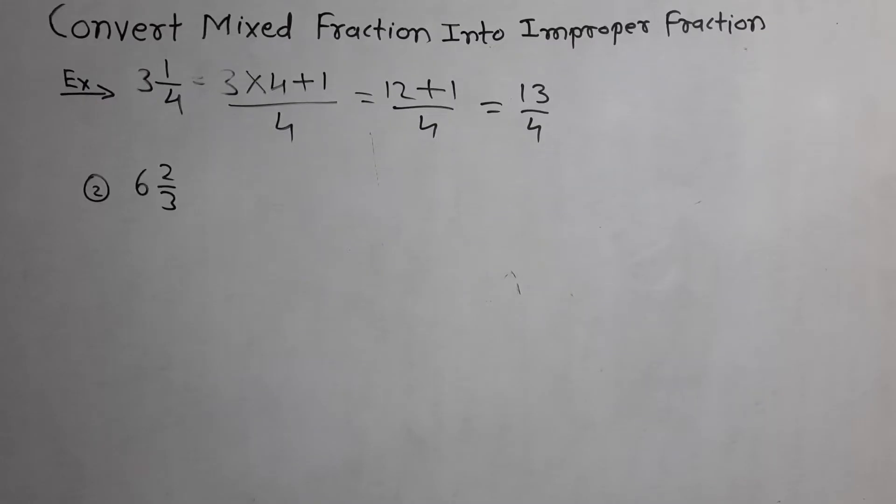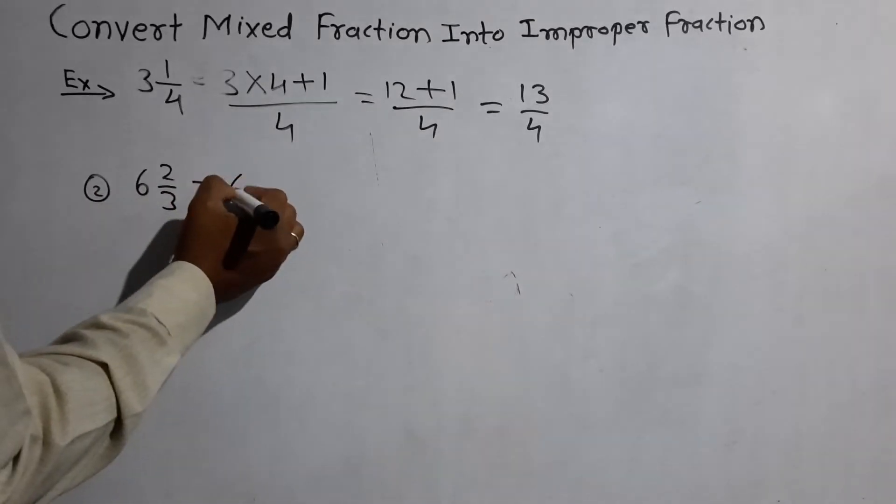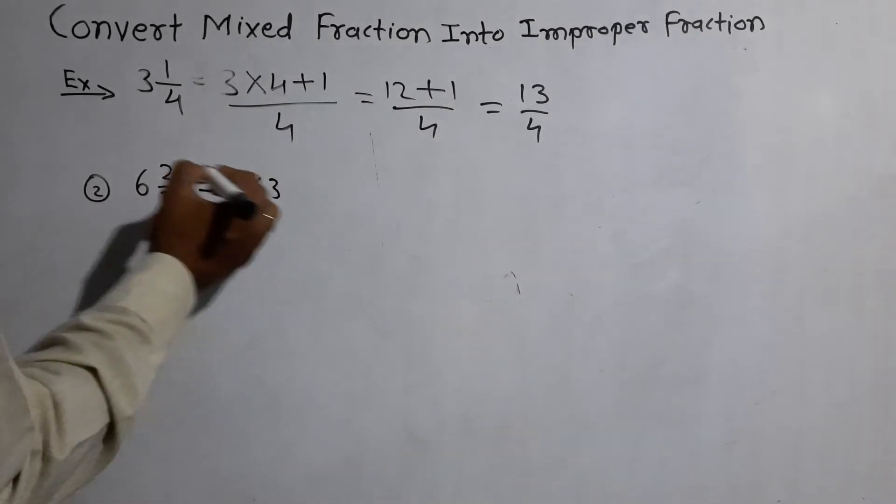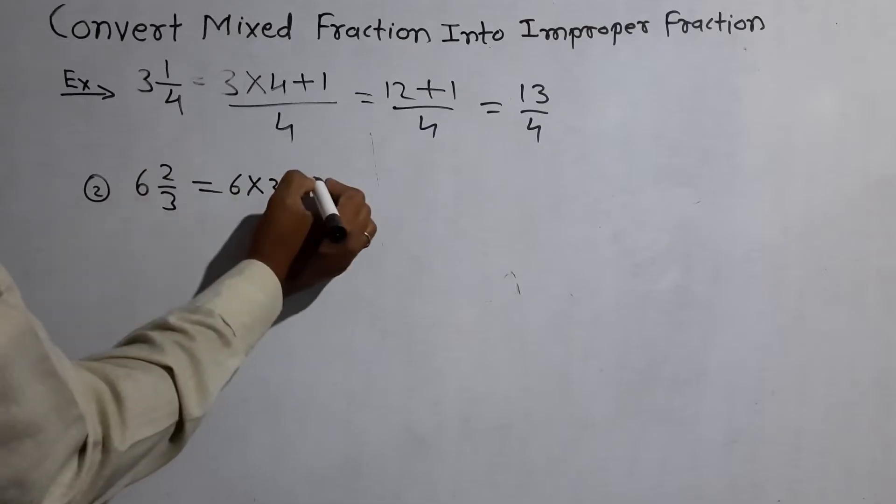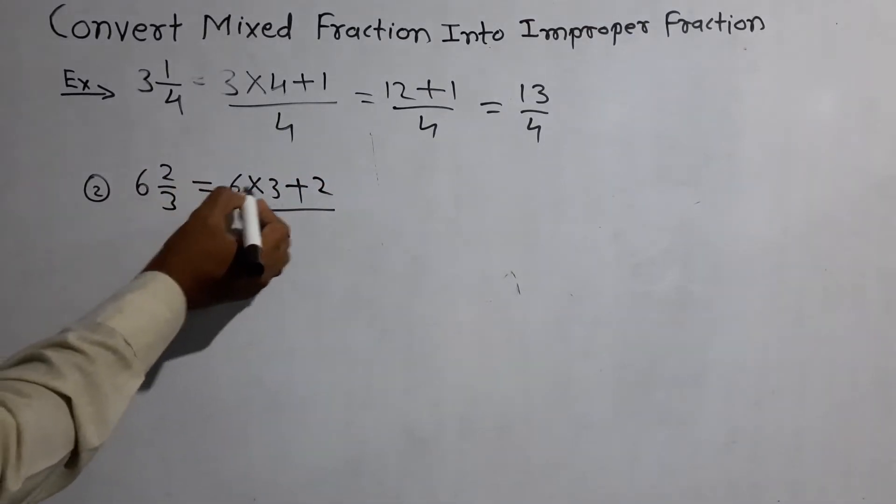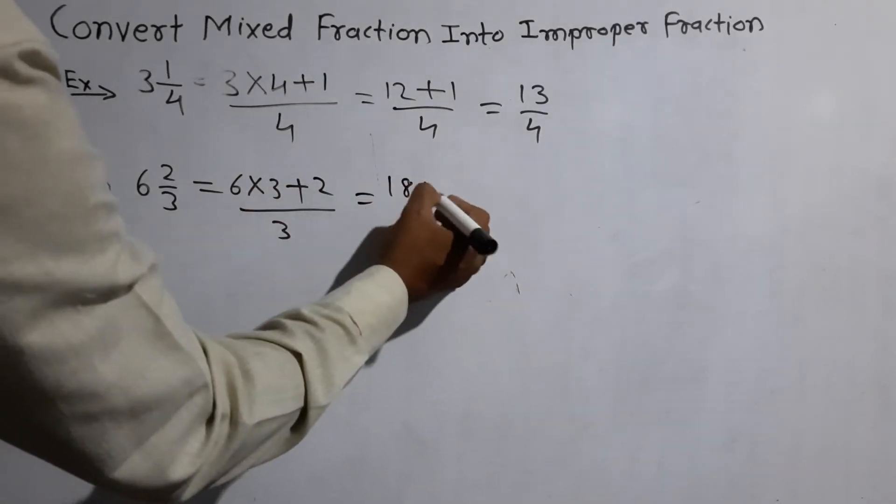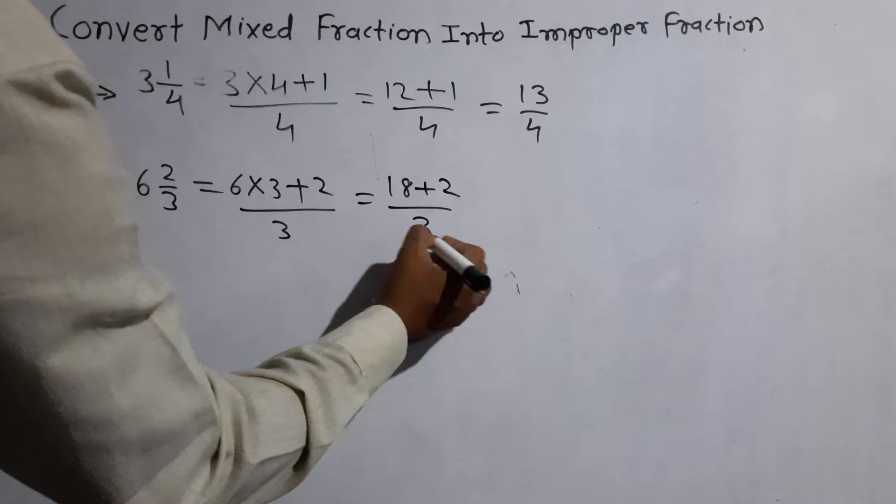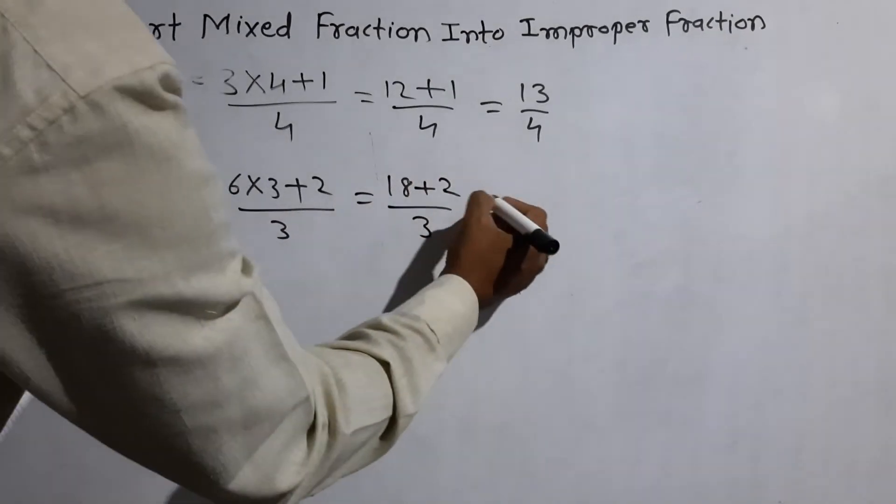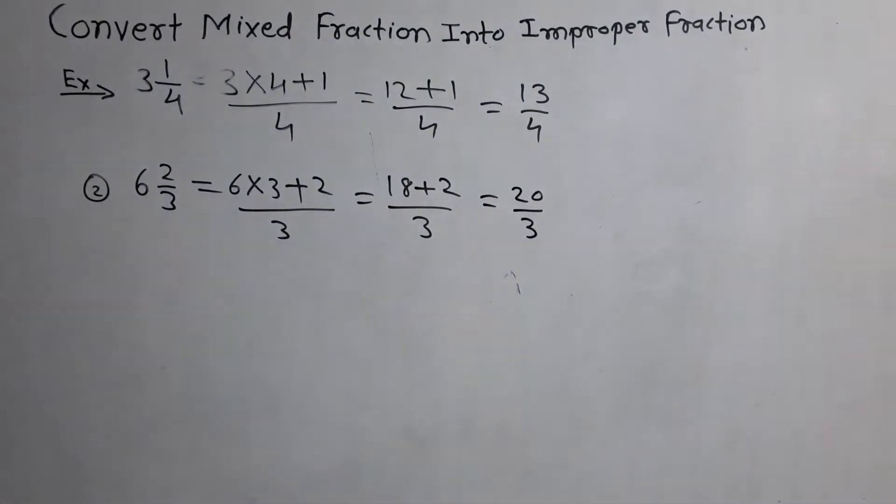Next example: 6 and 2 by 3 is equal to 6 into 3 plus 2 by 3. 6 threes are 18 plus 2 by 3. 18 plus 2 is equal to 20 by 3, the improper fraction of 6 and 2 by 3.